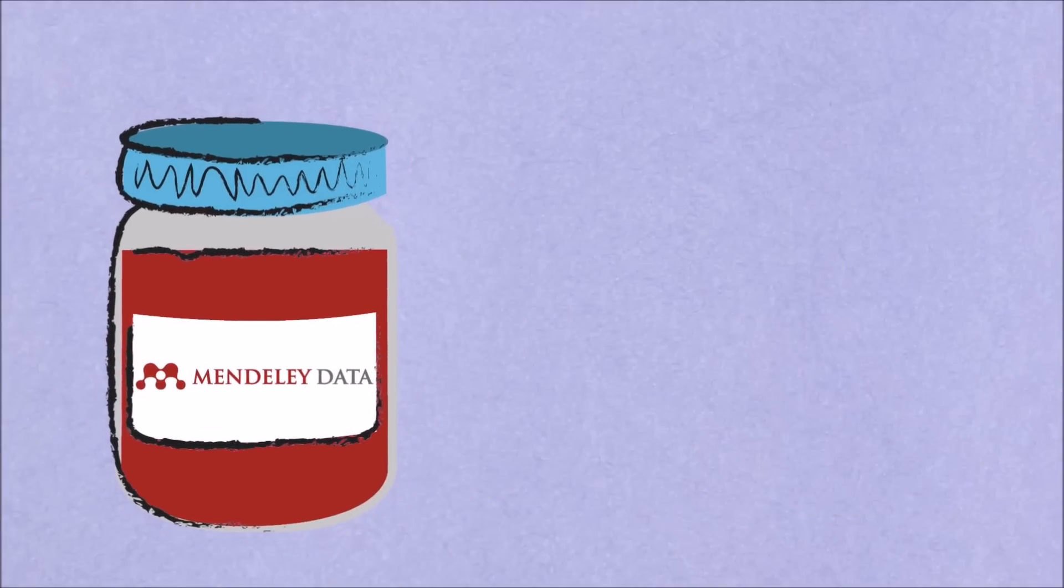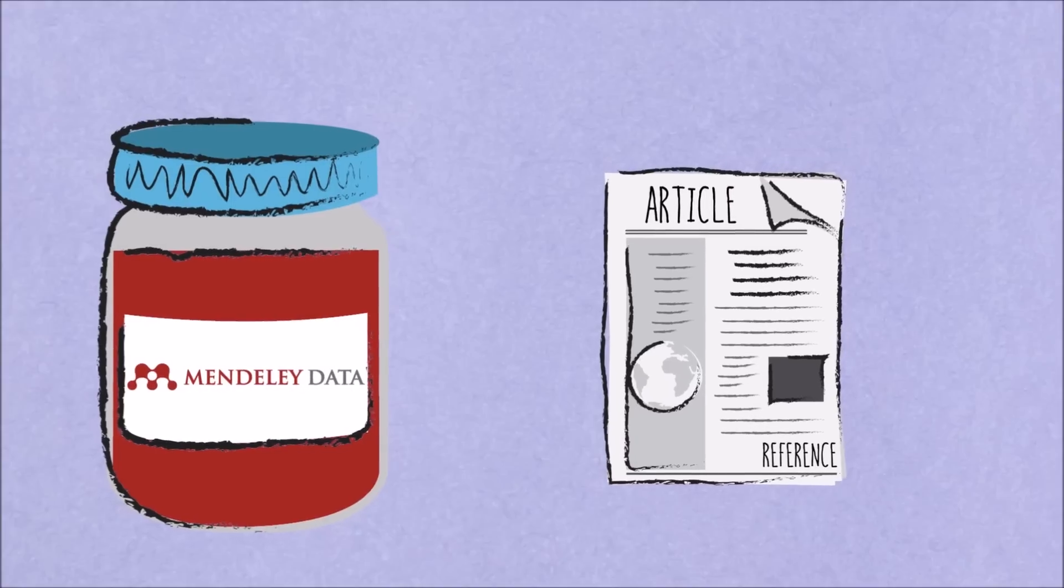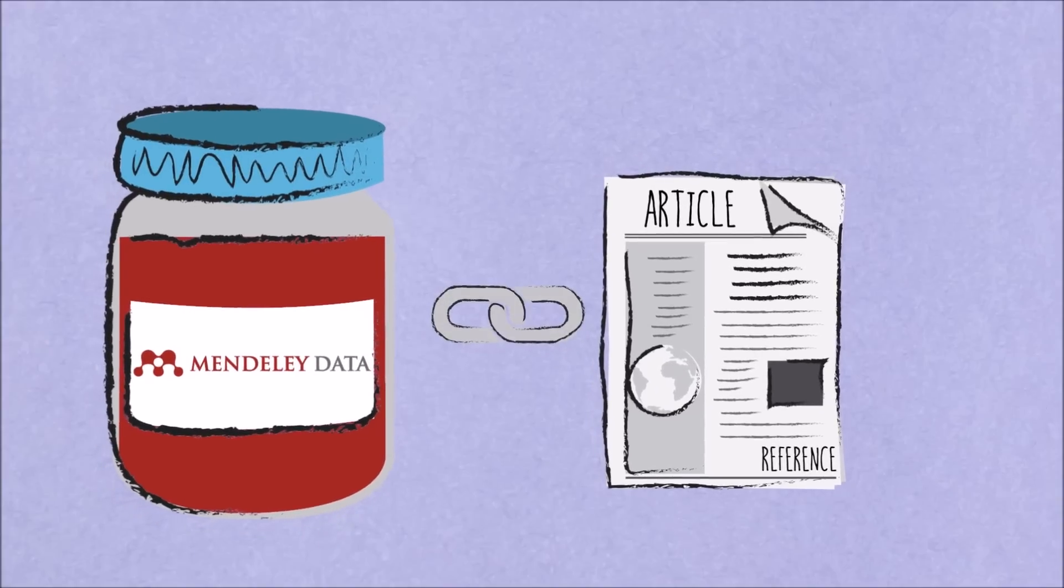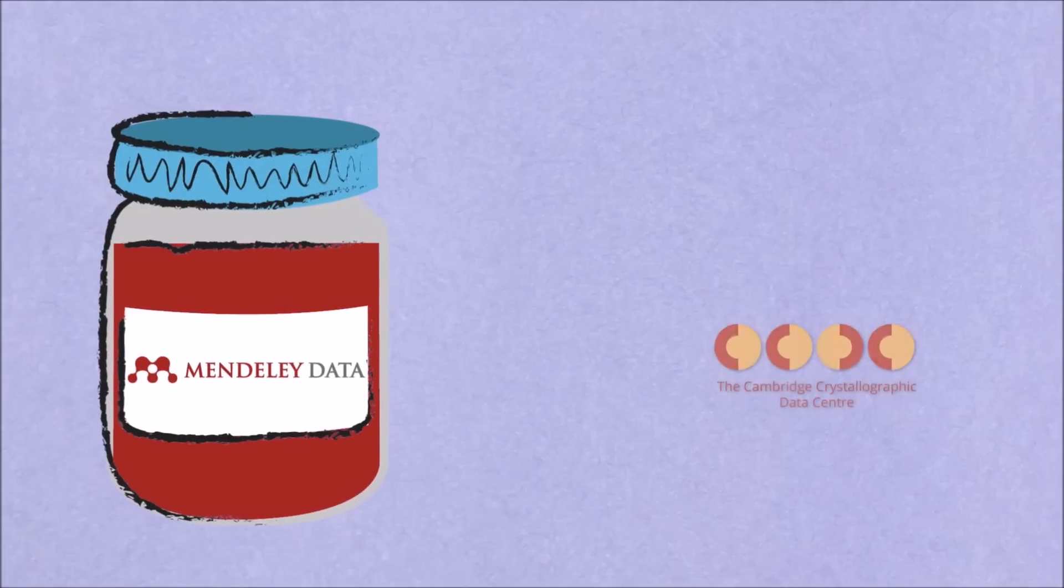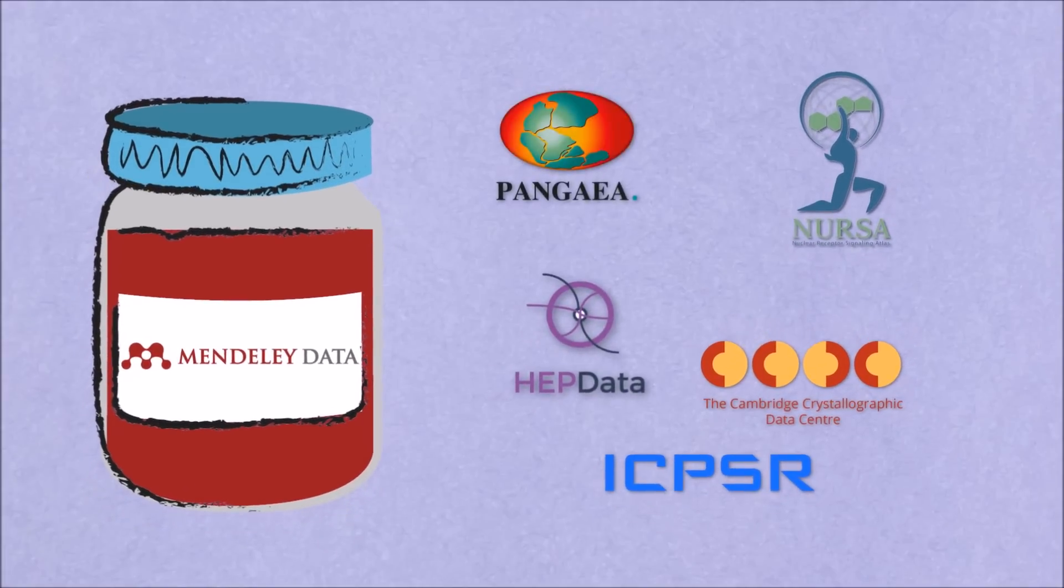You could share your data by uploading your data to Mendeley Data directly during the article submission process, or you might prefer to upload your data directly to another trusted data repository. Elsevier works together with over 80 specialized repositories to link your article on Science Direct to your data set and vice versa.